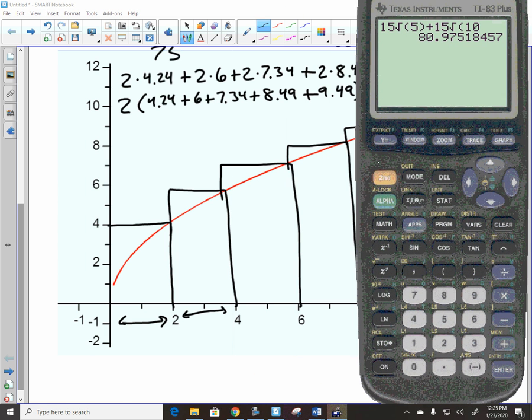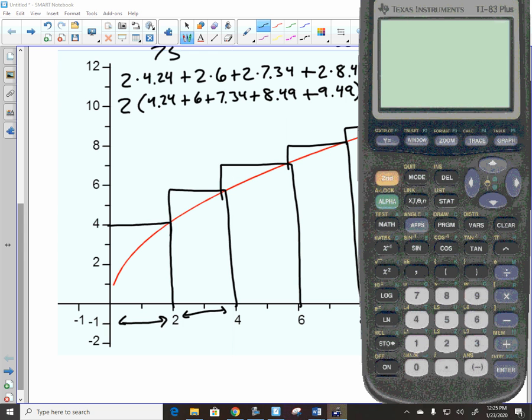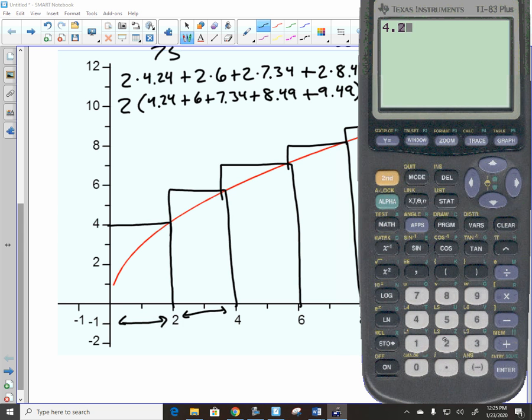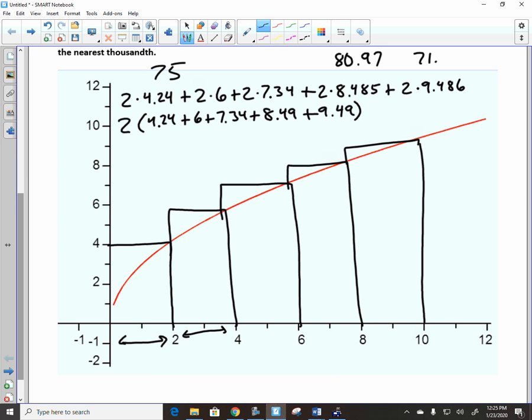Now look at what Riker has here, which is kind of interesting. Notice how every single one of these has a two times. So we could factor that out, and we could say it's going to be two times the sum of all the heights. So it's just two times 4.24 plus six plus 7.34 plus 8.49 plus 9.49. And that actually reduces our work, doesn't it? I'm going to add that up. The next one you're going to do on your own. I got 71.12. That's closer to the actual amount, isn't it? Is that an overestimation or an underestimation? It's definitely an overestimation.